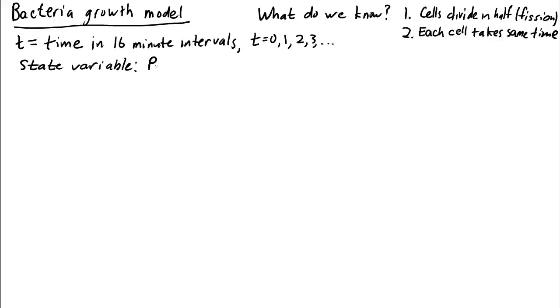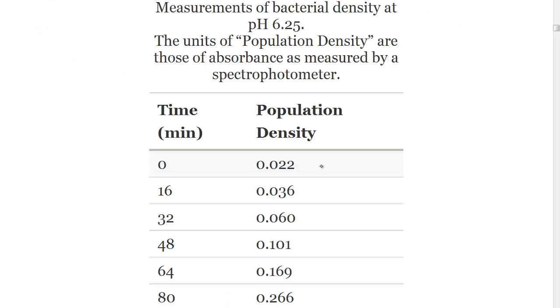What's our state variable? We'll let b sub t equal bacteria density in time interval t. Looking back at our chart, we see this means b0 is 0.022, b1 after 16 minutes is 0.036, b2 is 0.060, etc.